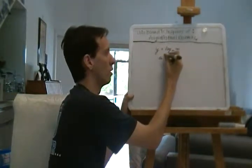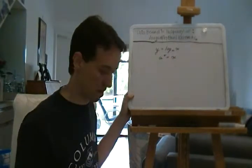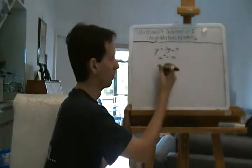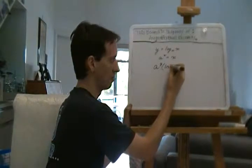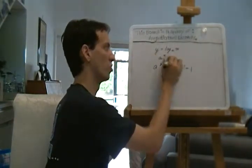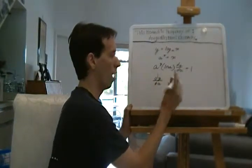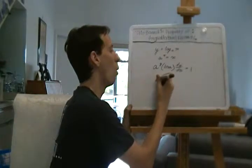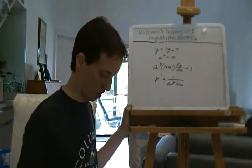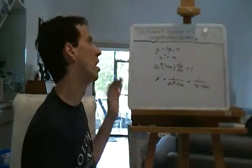What that means is that a to the y equals x — that's just using the fact about what a logarithm is. Then we can differentiate it implicitly. We get a to the y times log a times dy/dx equals 1. So y prime equals 1 over a to the y times log a. And since x equals a to the y, we get 1 over x log a. That's the way that works.